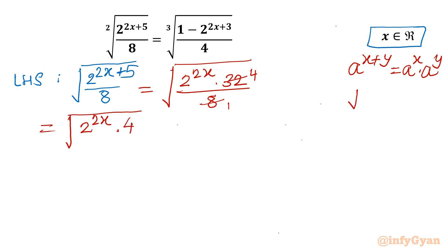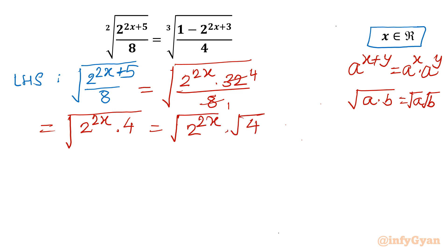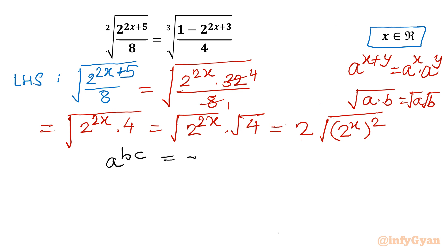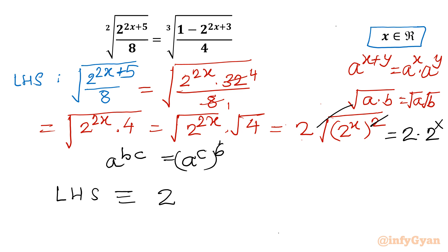Using the radical property √(ab) = √a · √b, I write square root of 2^(2x) times square root of 4. Square root of 4 is 2, so we get 2 times √(2^x)², which uses the property a^(b·c) = (a^c)^b. Cancelling the square root and the square gives us 2 times 2^x, which equals 2^(x+1).